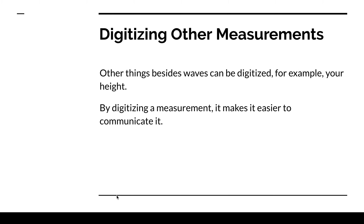Other things besides waves can be digitized. For example, your height. By digitizing a measurement, it makes it easier to communicate. When we look at our height, we don't know how exactly tall we are until we actually put a number to it — that's what digitizing our height means. And that's it for the introduction to digitizing sound waves. Be sure to continue your reading on Teach TCI to keep learning about how sound waves and other types of waves send information.